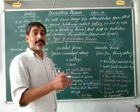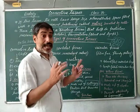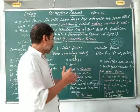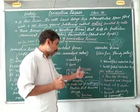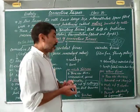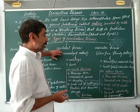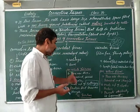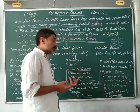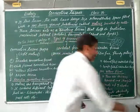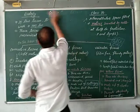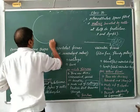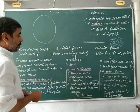Tendons are a special type of white fibrous connective tissue that connect bone to muscles. These white fibrous connective tissues are very dense and are arranged in bundles. This is the white fibrous connective tissue.